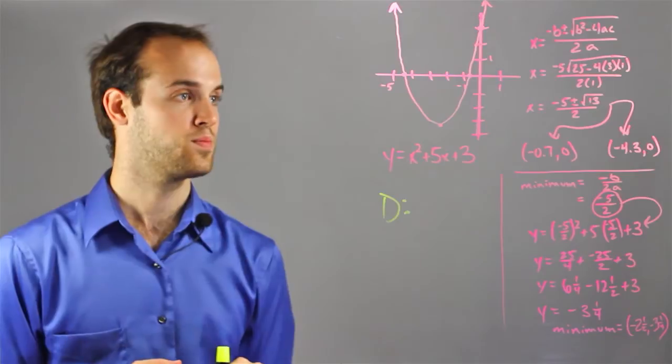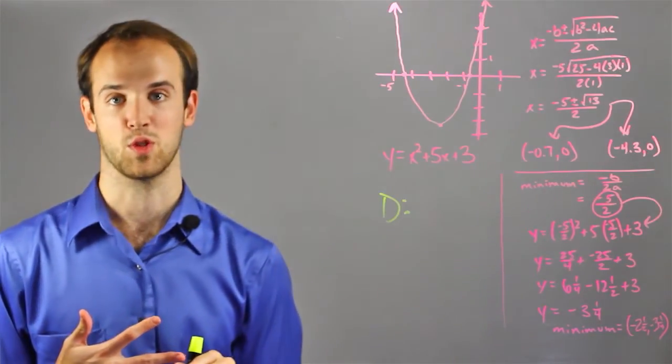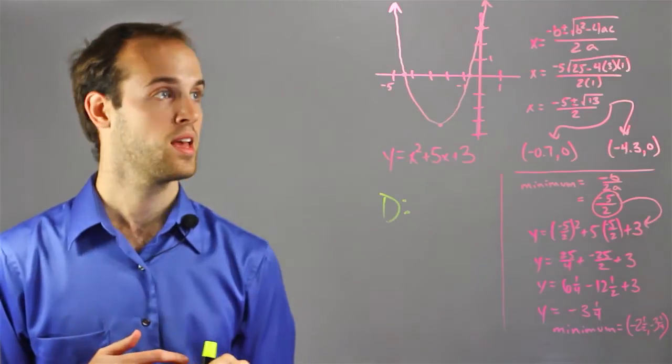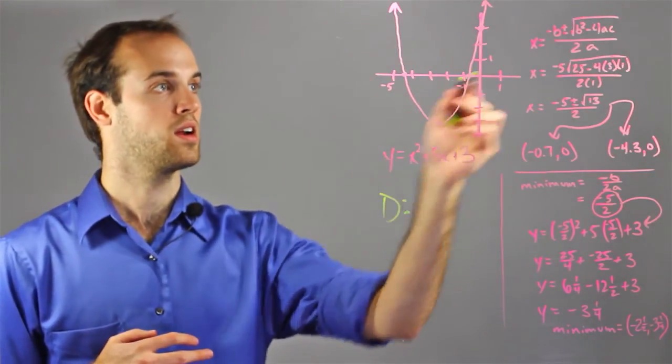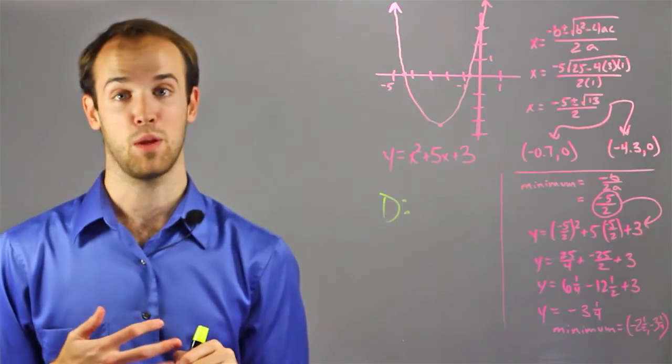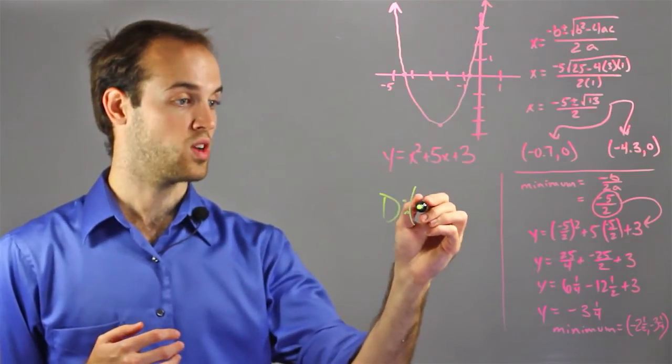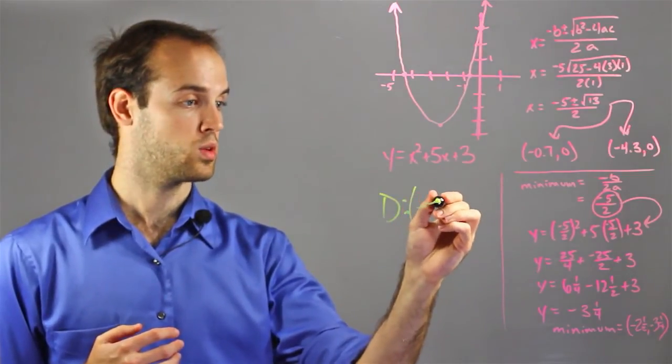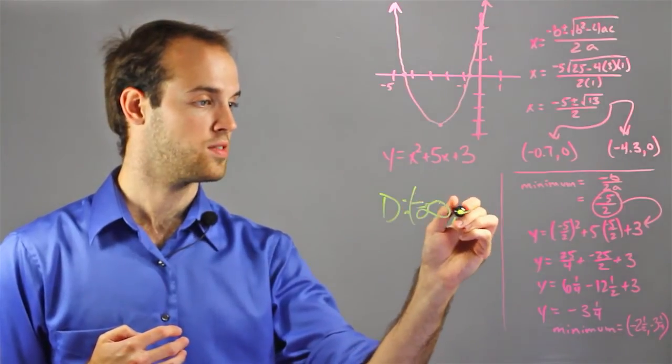So let's look at our domain, which is really solving for when our x-values are going to be restricted in any way. And you can see that this parabola just keeps getting wider on both sides. It's going to keep getting wider as it goes up, meaning that there's going to be no restrictions on our x's at all, which means the domain is all real numbers, which goes from negative infinity to positive infinity.